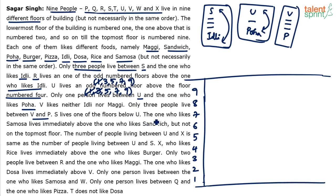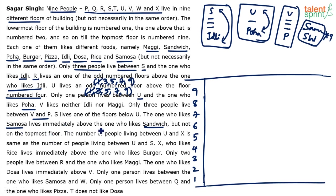The one who likes samosa lives immediately above the one who likes sandwich, but not on the topmost floor. So samosa is immediately above sandwich, and samosa cannot be on the 9th floor. It can be on the 8th, 7th, 6th floor and so on, but not the 9th — and of course not the 1st floor either, since sandwich would then be on the 0th floor.